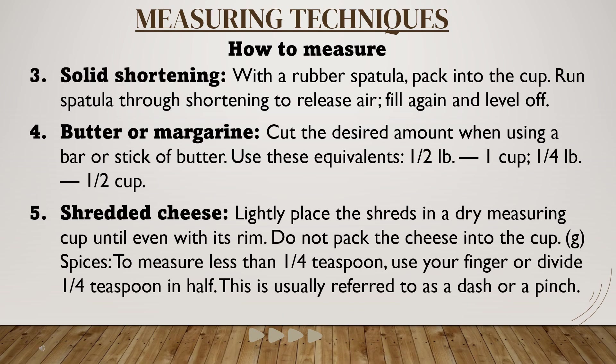For solid shortening: with a rubber spatula, pack into the cup. Run the spatula through the shortening to release air, fill again, and level off. For butter or margarine: cut the desired amount when using a bar or stick of butter. Use these equivalents — one-half pound equals one cup; one-quarter pound equals half a cup. For shredded cheese: lightly place the shreds in a dry measuring cup until even with the rim. Do not pack the cheese into the cup.